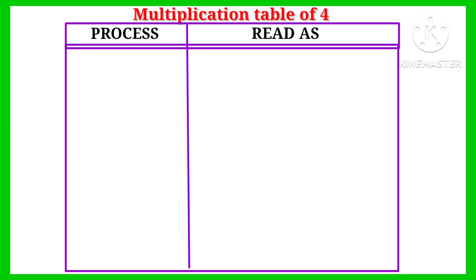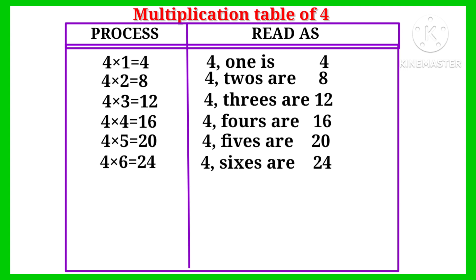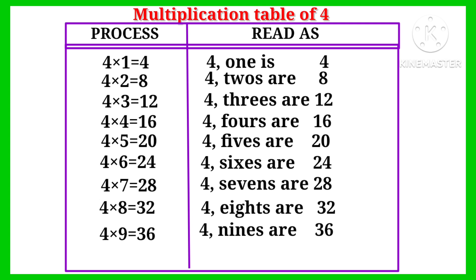Multiplication table of four: four one is four, four twos are eight, four threes are twelve, four fours are sixteen, four fives are twenty, four sixes are twenty-four, four sevens are twenty-eight, four eights are thirty-two, four nines are thirty-six, four tens are forty.